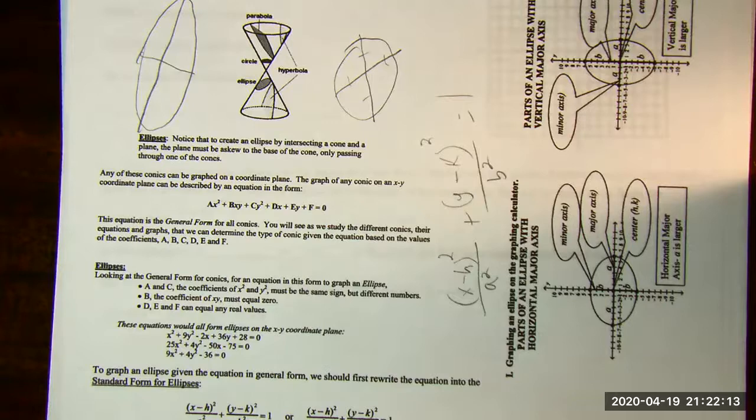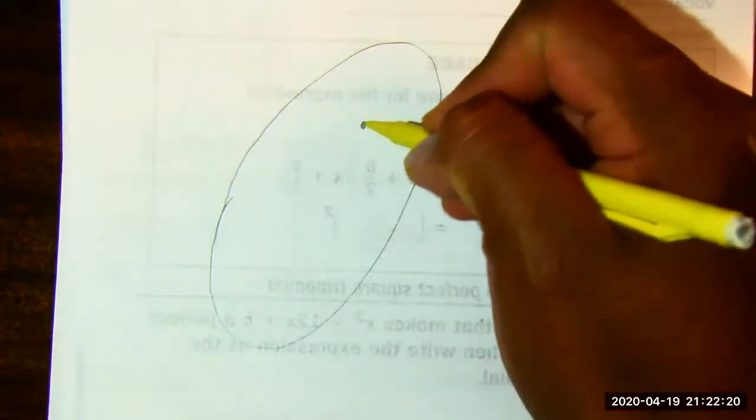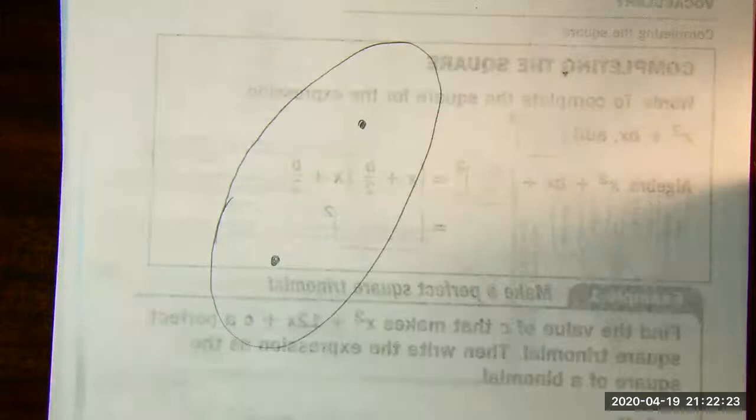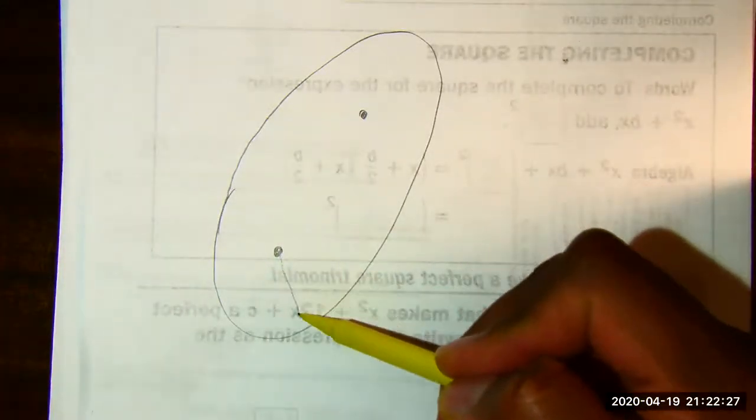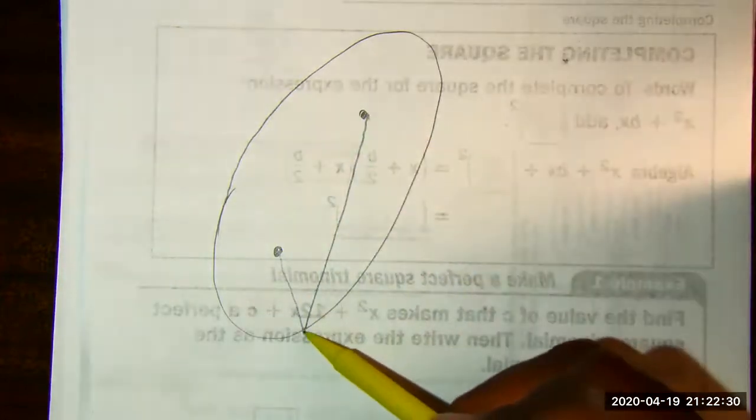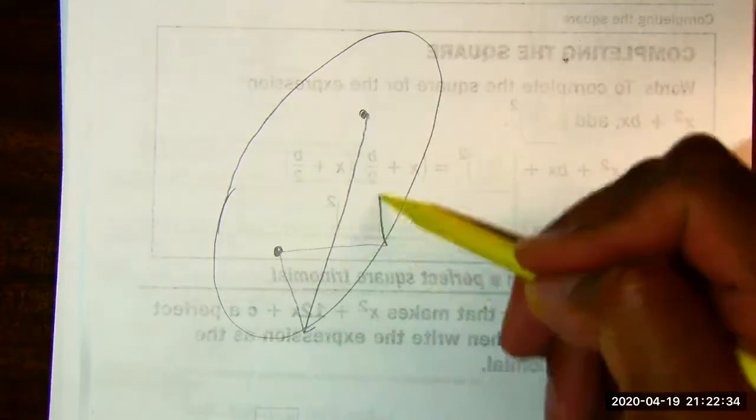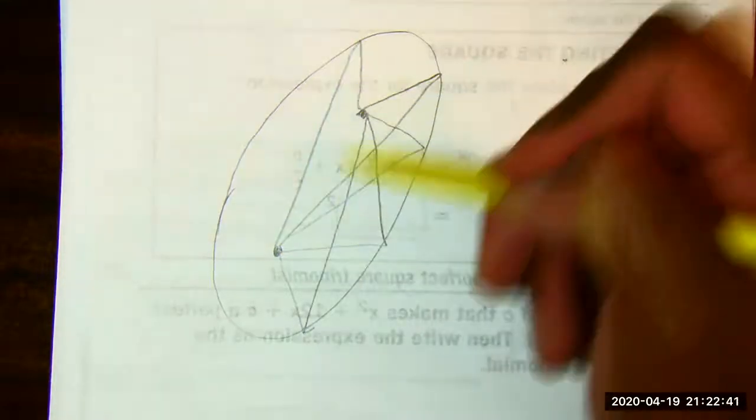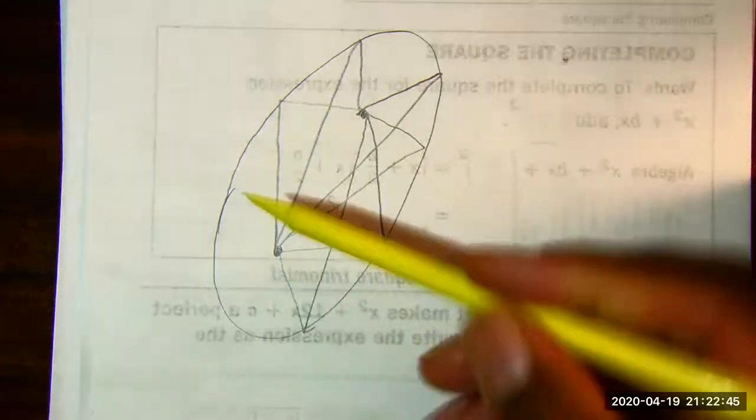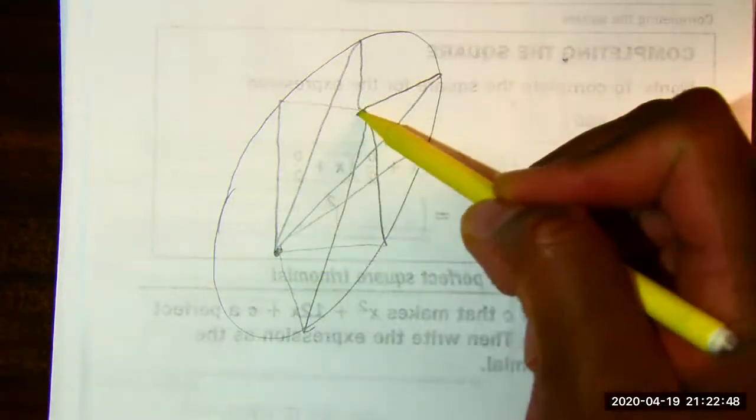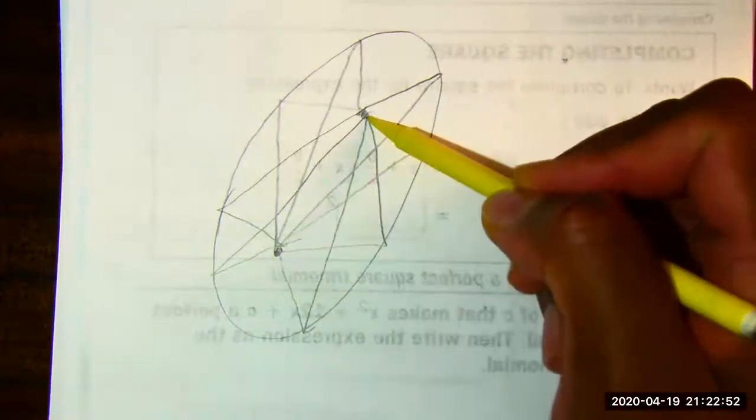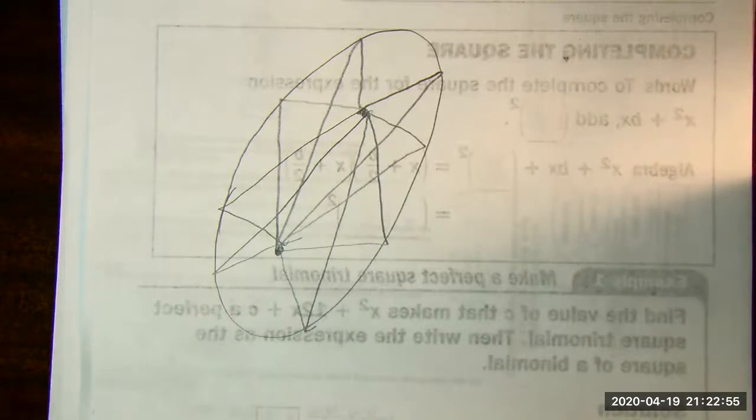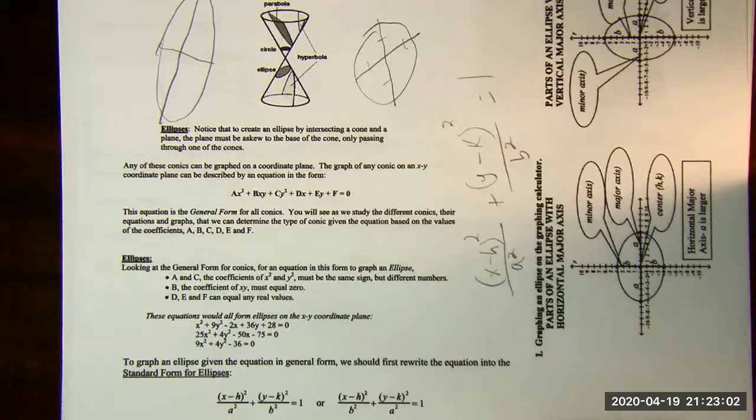Ellipses also have something we call a foci. In class, we would have done an activity where we get two pens and put a piece of string around it and that piece of string would be long enough wherever it ended, we put a pencil here, stretch that piece of string, stretch it out, and that's how we would sketch an ellipse. So every point on the ellipse has some relation to each foci. It's a fascinating thing going on.